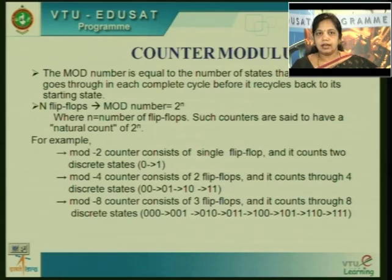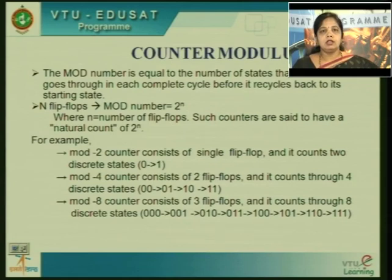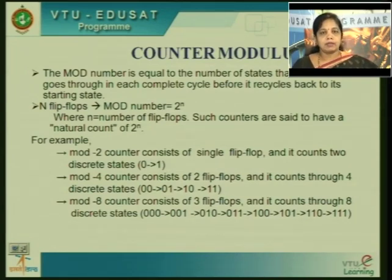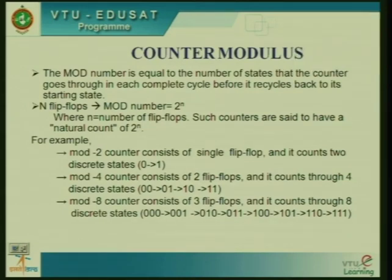First we decide how many flip-flops are required, then we decide the final count value. For mod 8, the count is 0 to 7 — 8 states — starting from 000 to 111, requiring 3 flip-flops. Whether it is an up counter or a down counter, the number of states and flip-flops remain the same; only the counting direction differs — incrementing or decrementing.